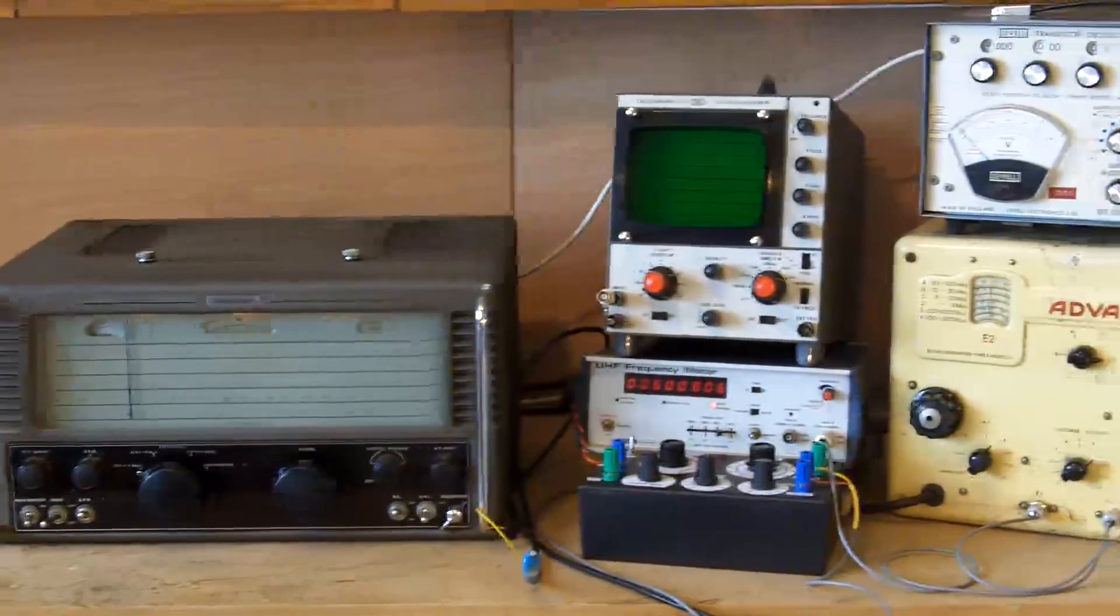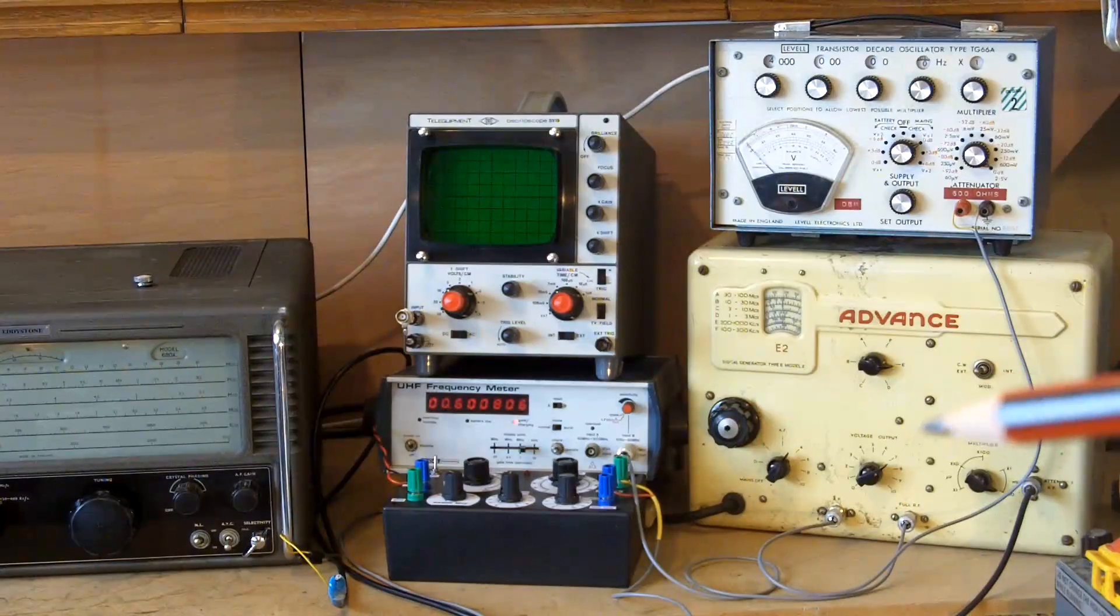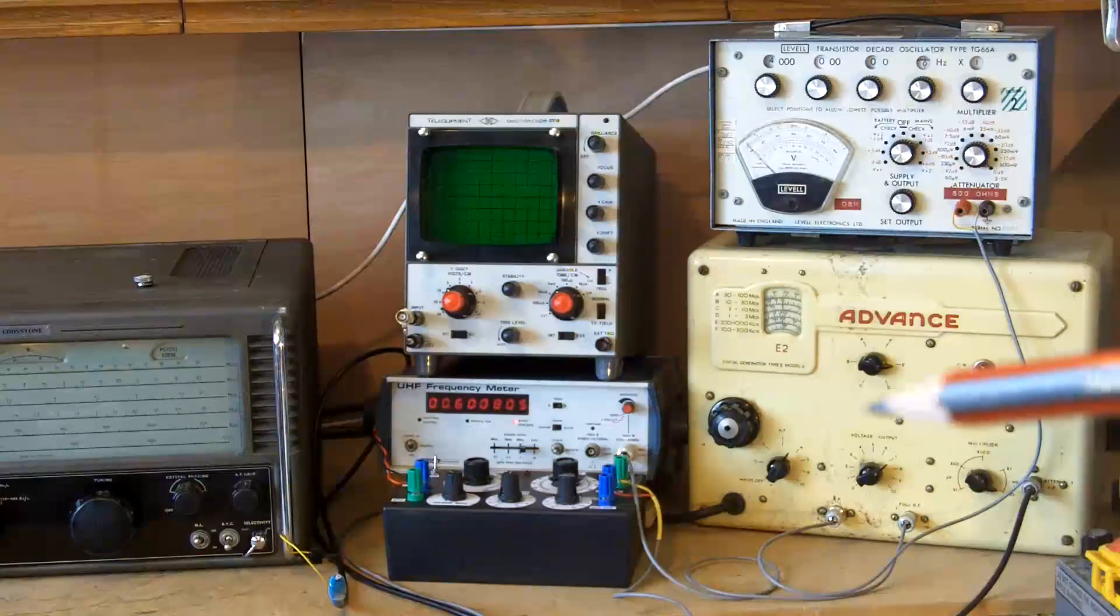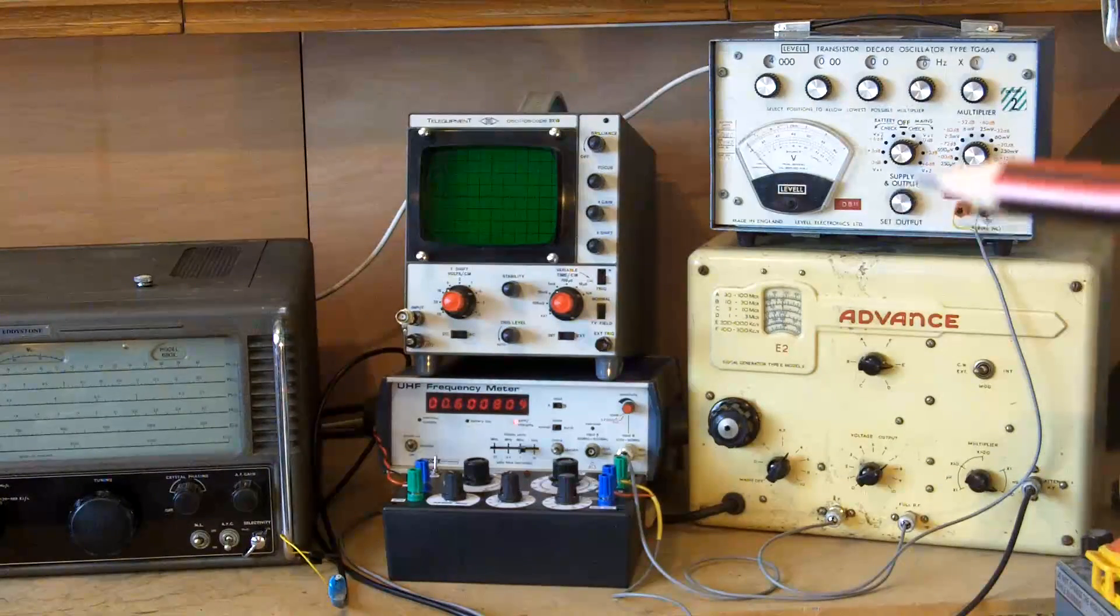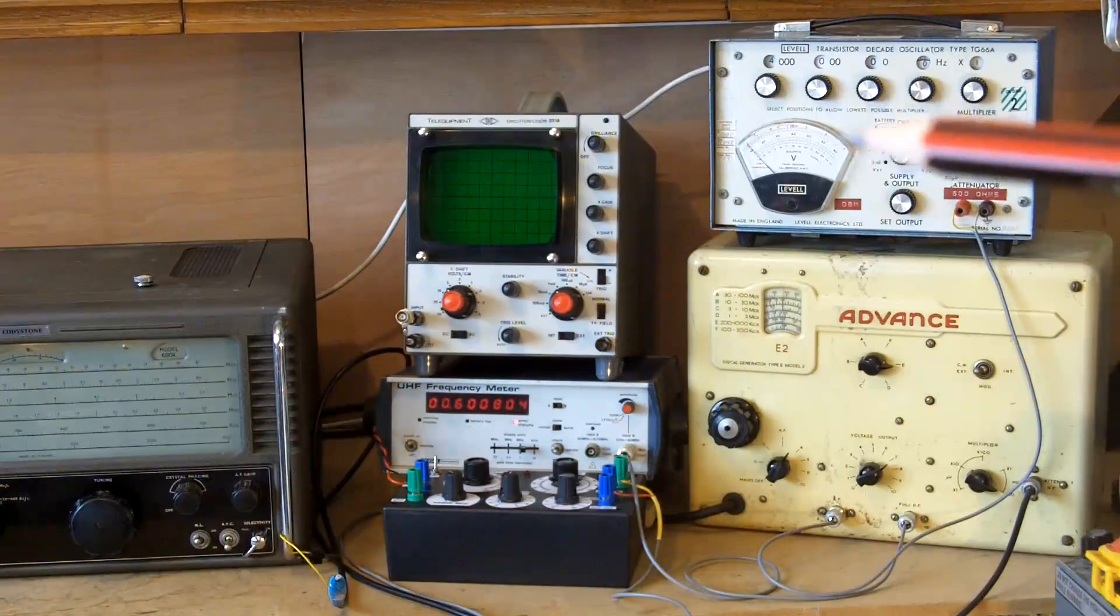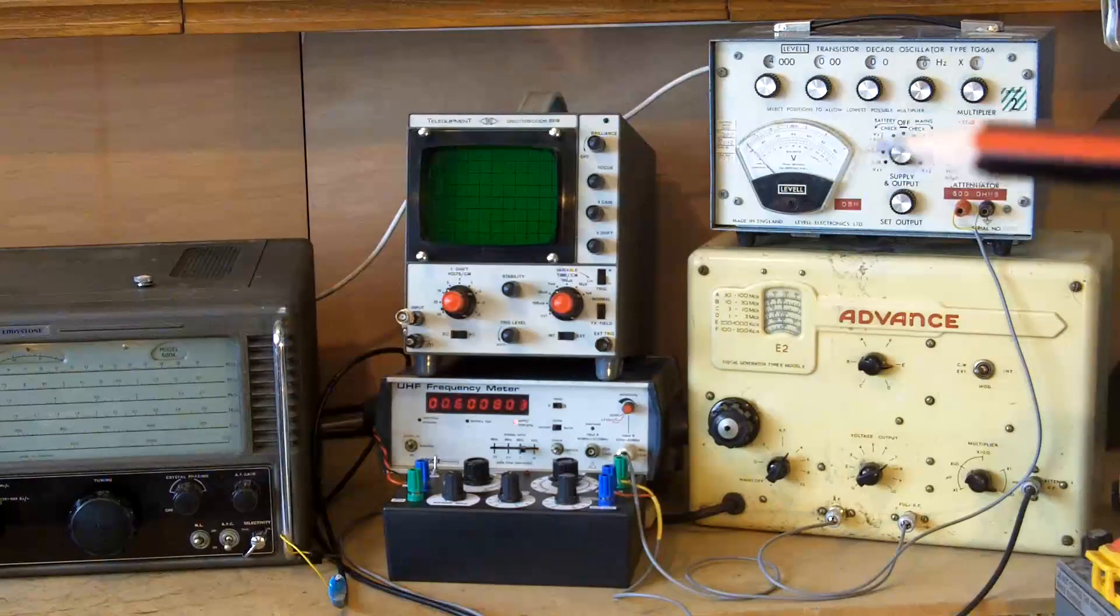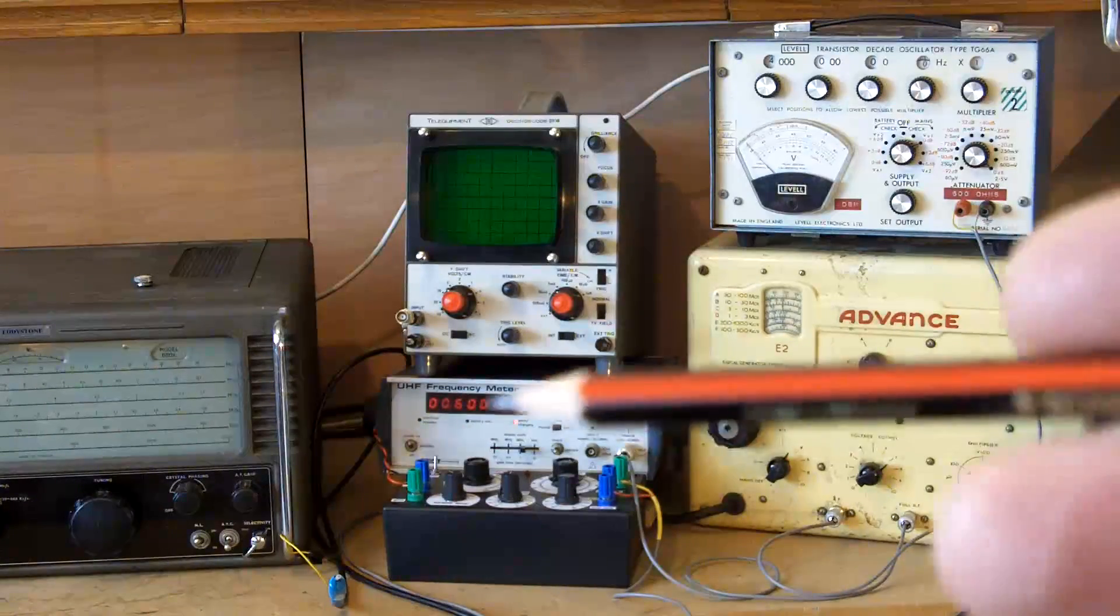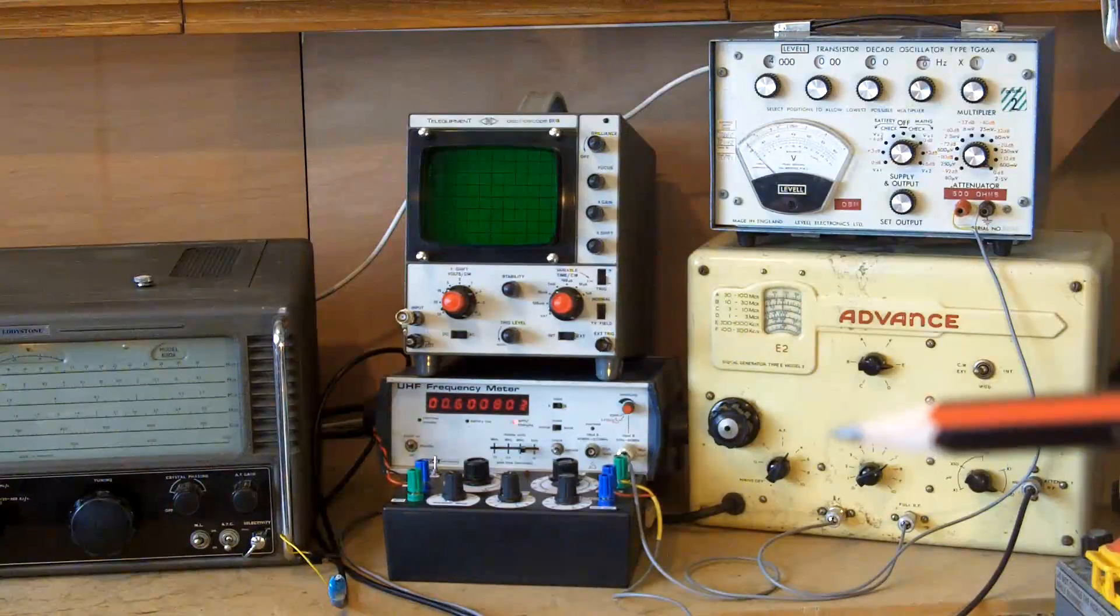The equipment that I'm going to be using for the alignment is my signal source, the Advance signal generator there. I've had that on for a good few hours to try and get it nice and stable. I'll be modulating that with my level signal generator, so I'll be putting in an audio tone, or audible tone, into the advance to modulate that.